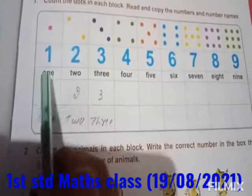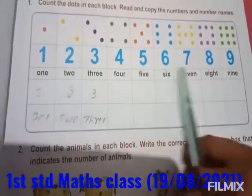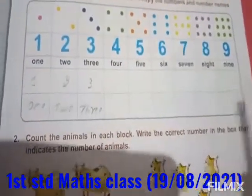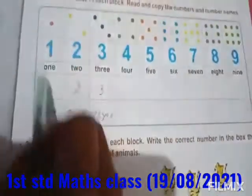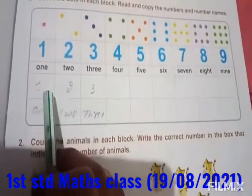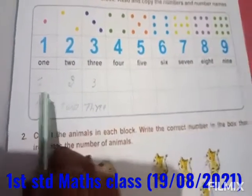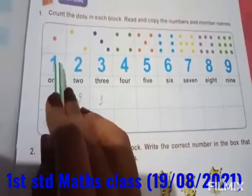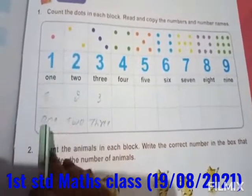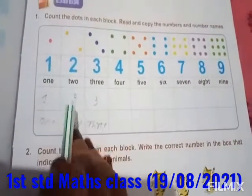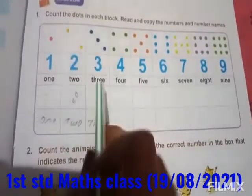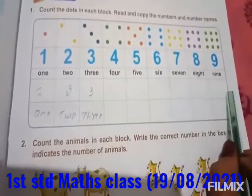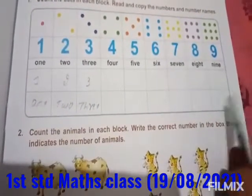Okay, children? You have to remember this — the numbers and the number's names. In the blanks, you have to fill them in. How? As it is: 1, ONE; 2, TWO; 3, THREE. You have to complete this. This is your homework.